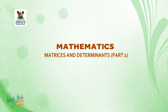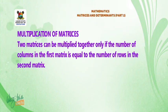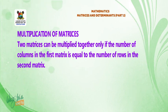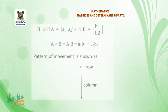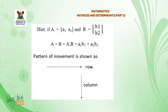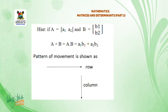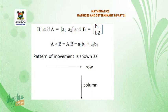Welcome back. Multiplication of matrices. Two matrices can be multiplied together only if the number of columns in the first matrix is equal to the number of rows in the second matrix. Hint: if A equals matrix A1, A2 and B equals matrix B1, B2, then A times B equals A·B, which equals A1·B1 plus A2·B2. The pattern of movement is shown as row by column.